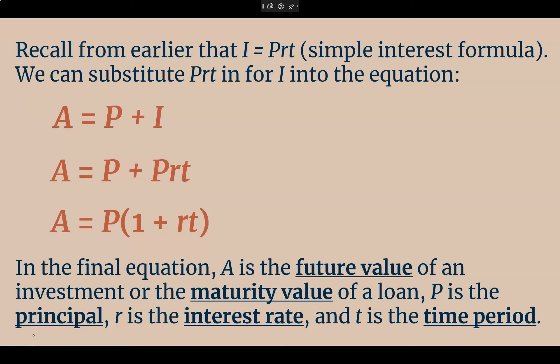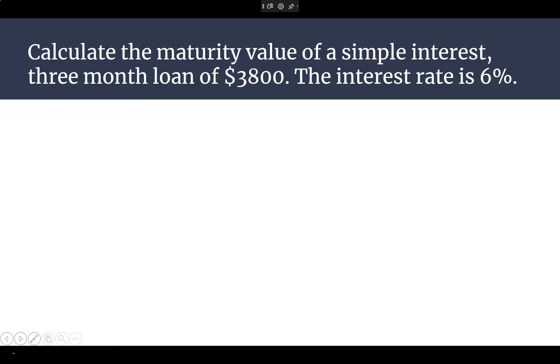We're going to do two of these, and then I'll let you work on your assignment. Remember, future value and investment means you are earning money. A loan means you have borrowed money and you're paying them back. Ready for our first example? Here we go. Calculate the maturity value of a simple interest three-month loan of $3,800 if the interest rate is 6%. So, this time, we got my P, R, T. That's all we need. What is our principal amount? $3,800.